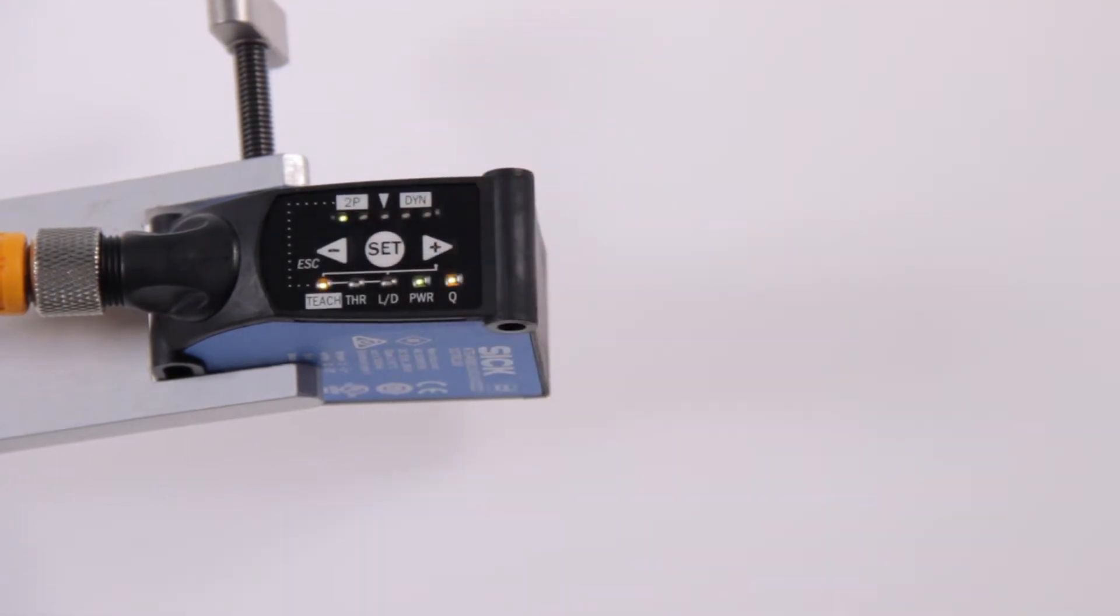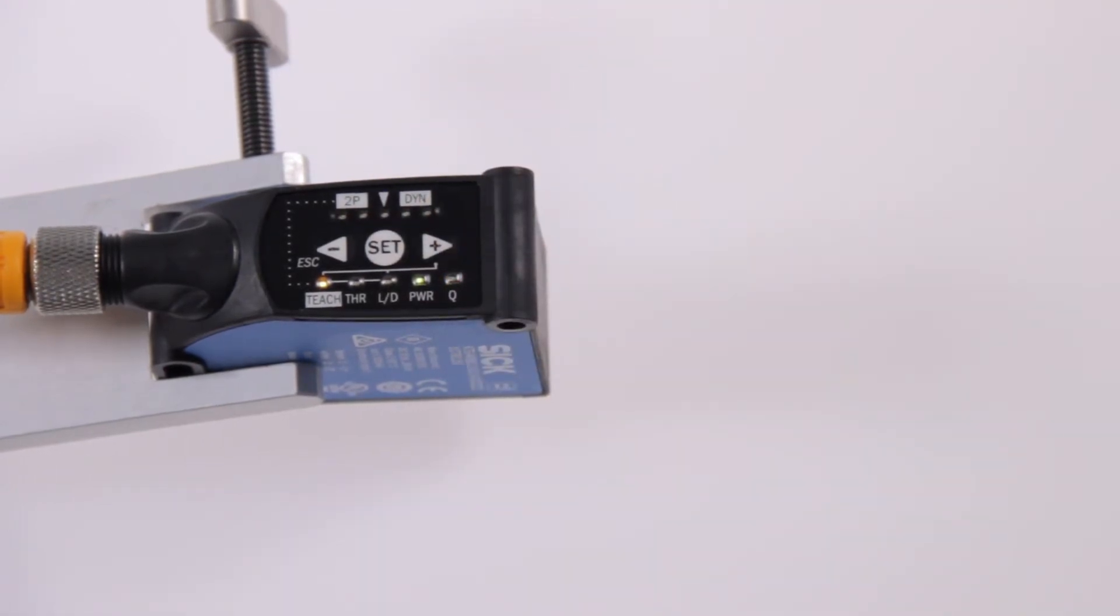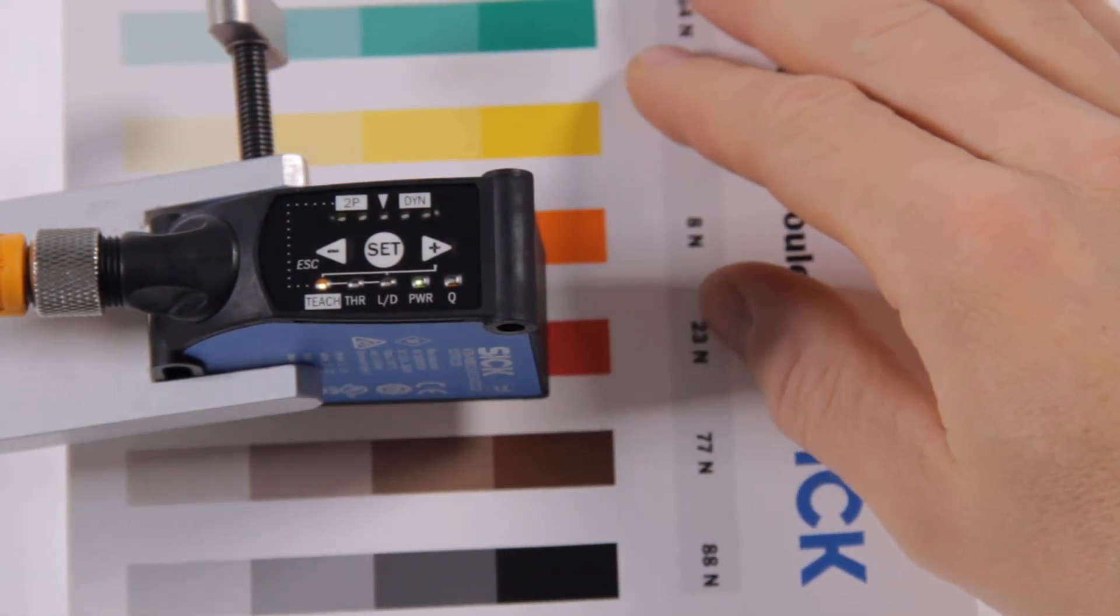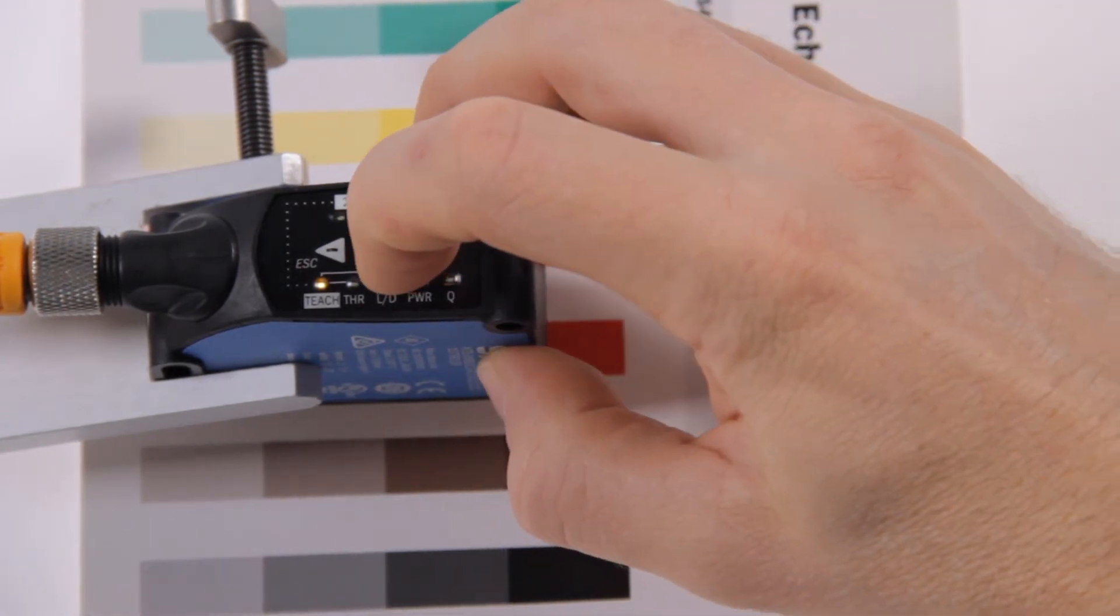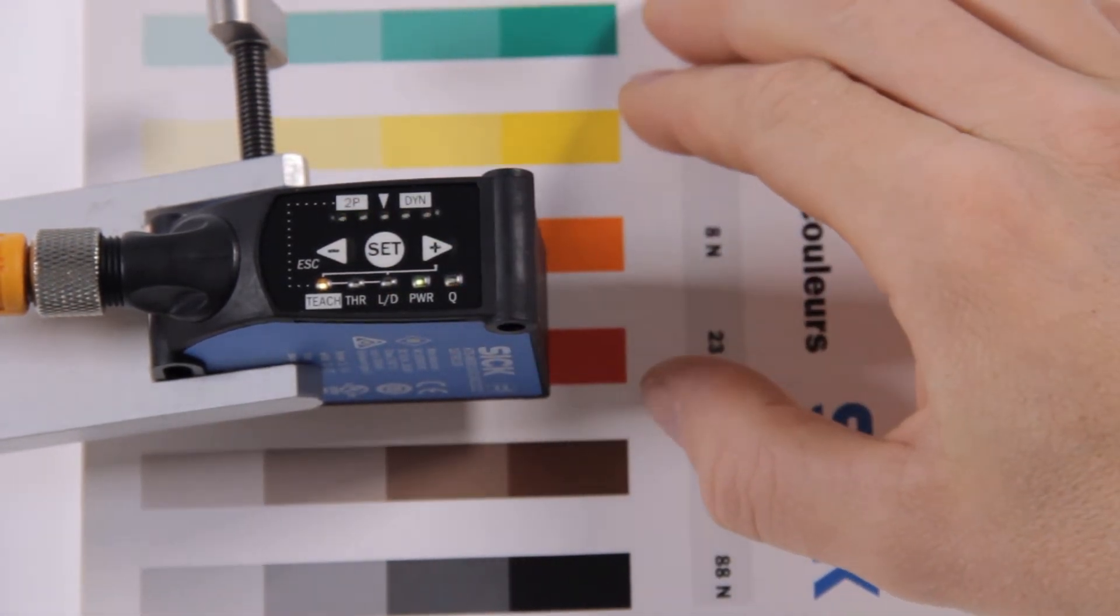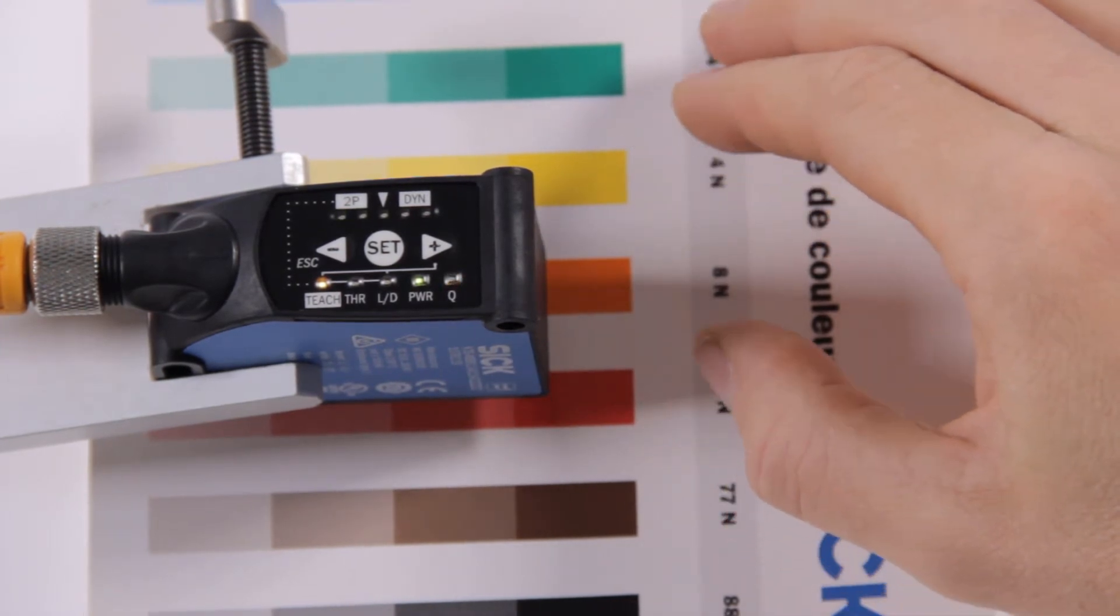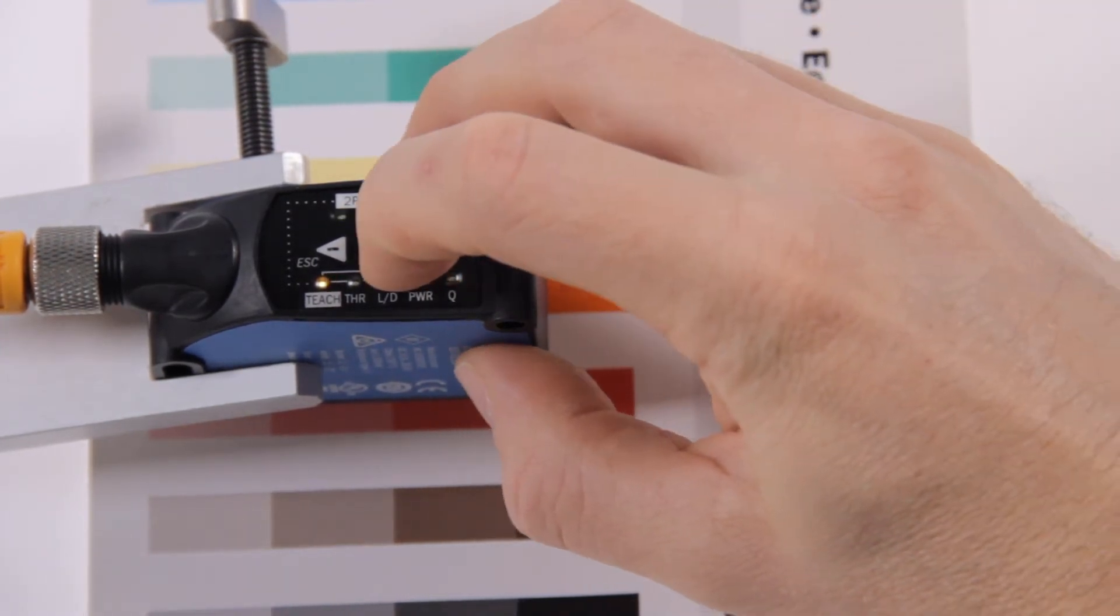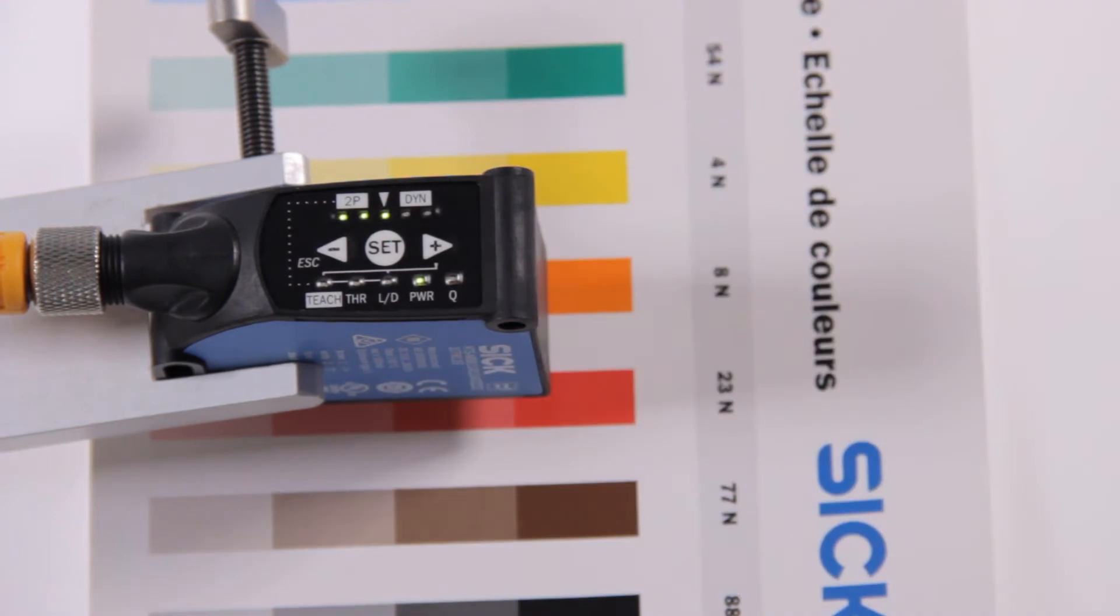The first green LED blinks. Place the print mark under the light spot and press SET. Now the second LED blinks, indicating that the second teach point is required. Now move the background under the light spot and press SET. The teach-in procedure is done.